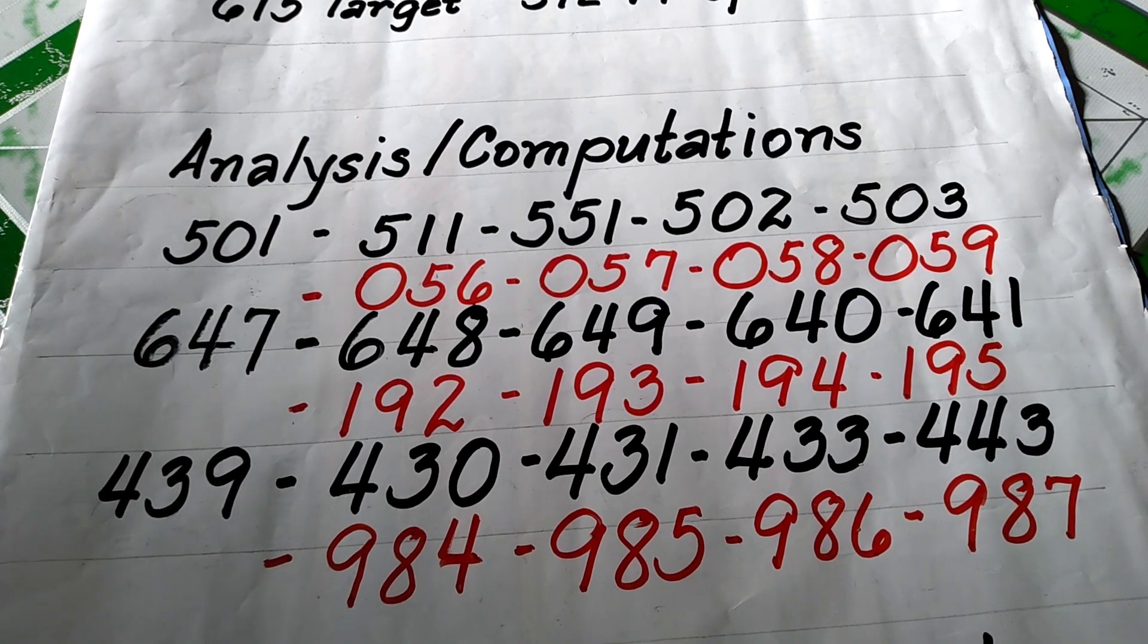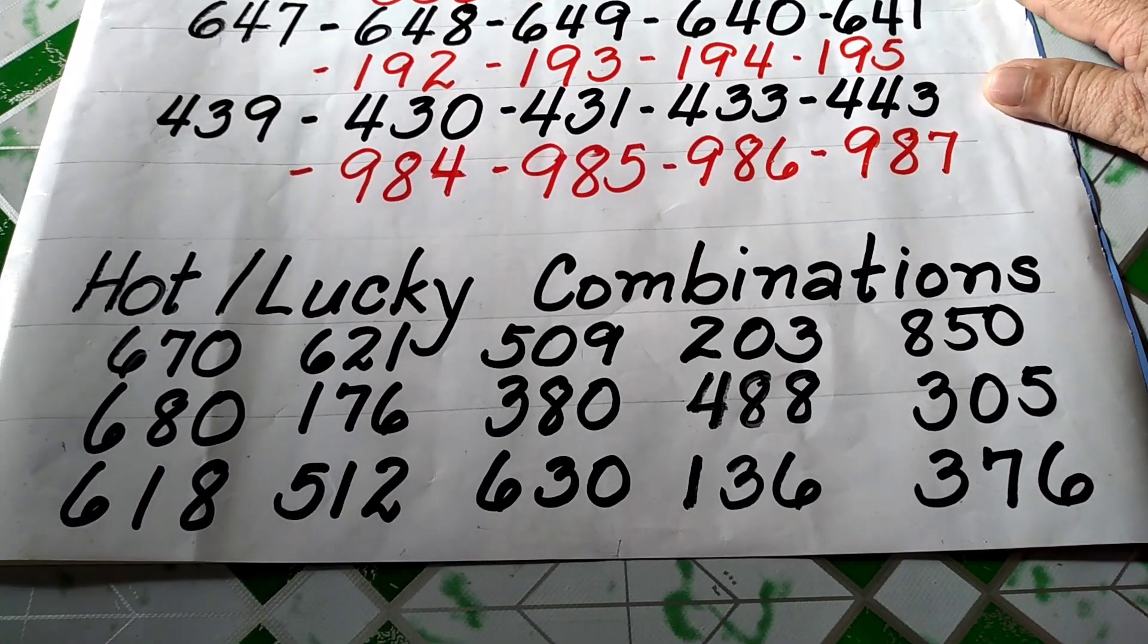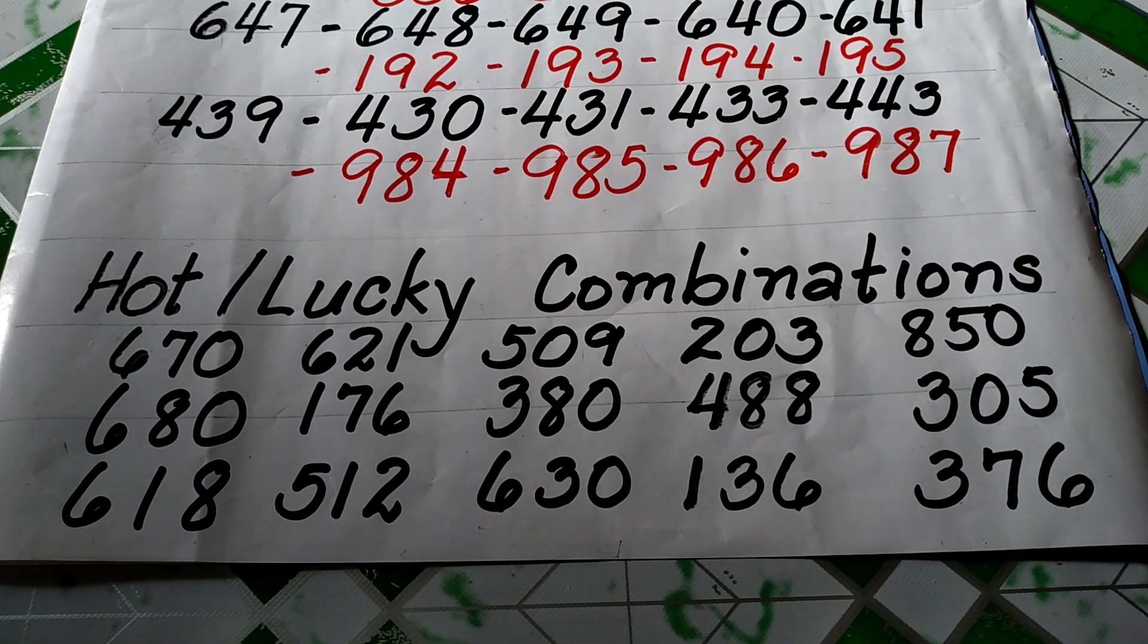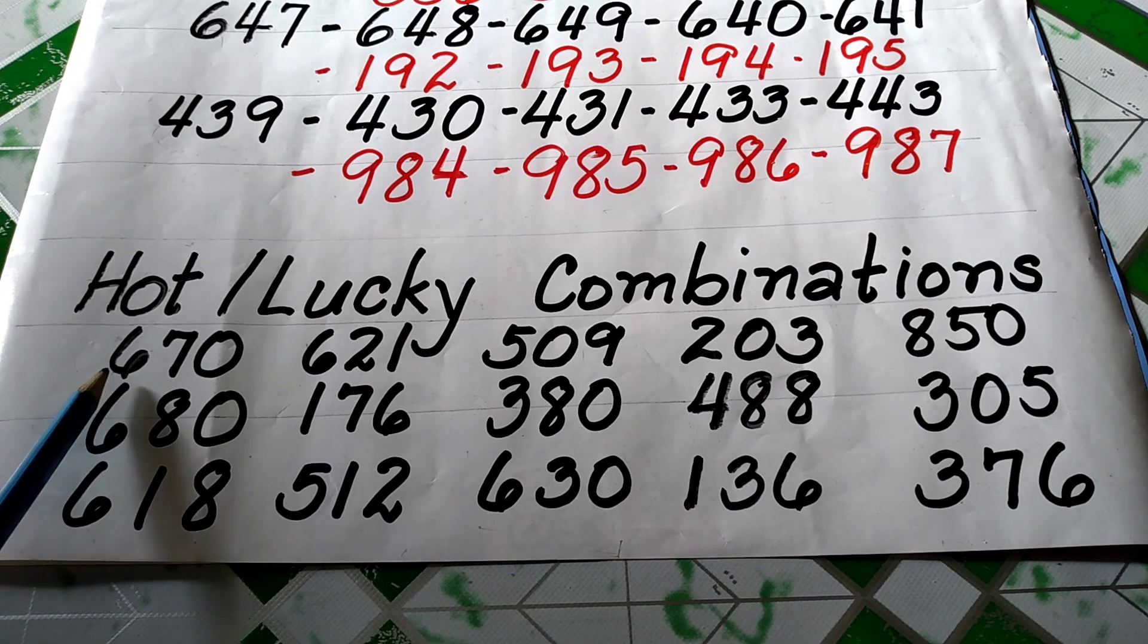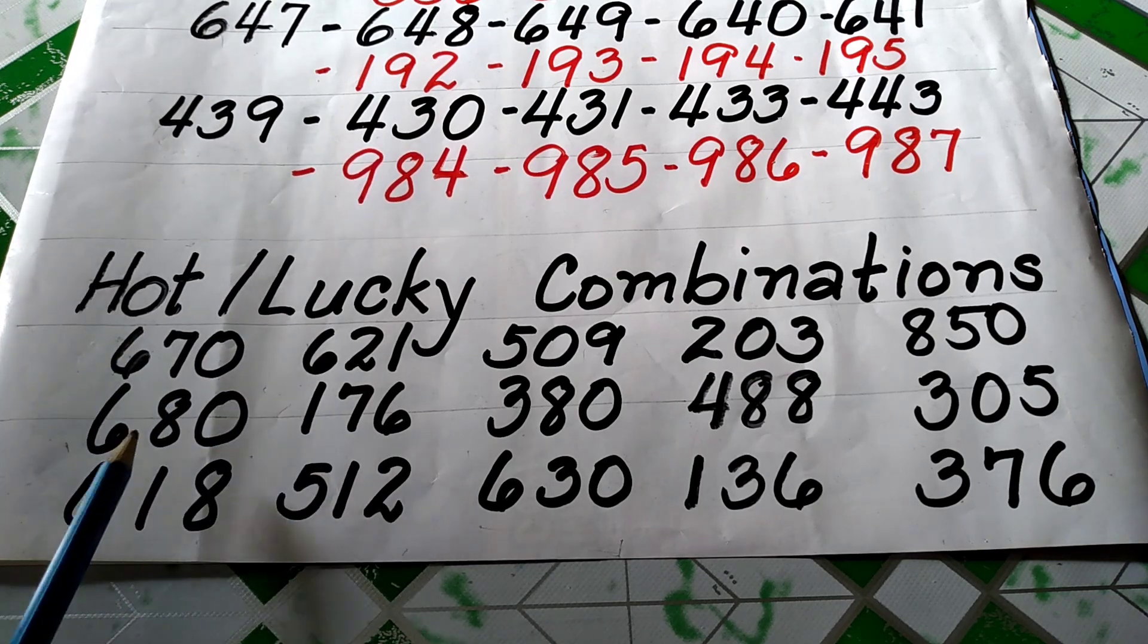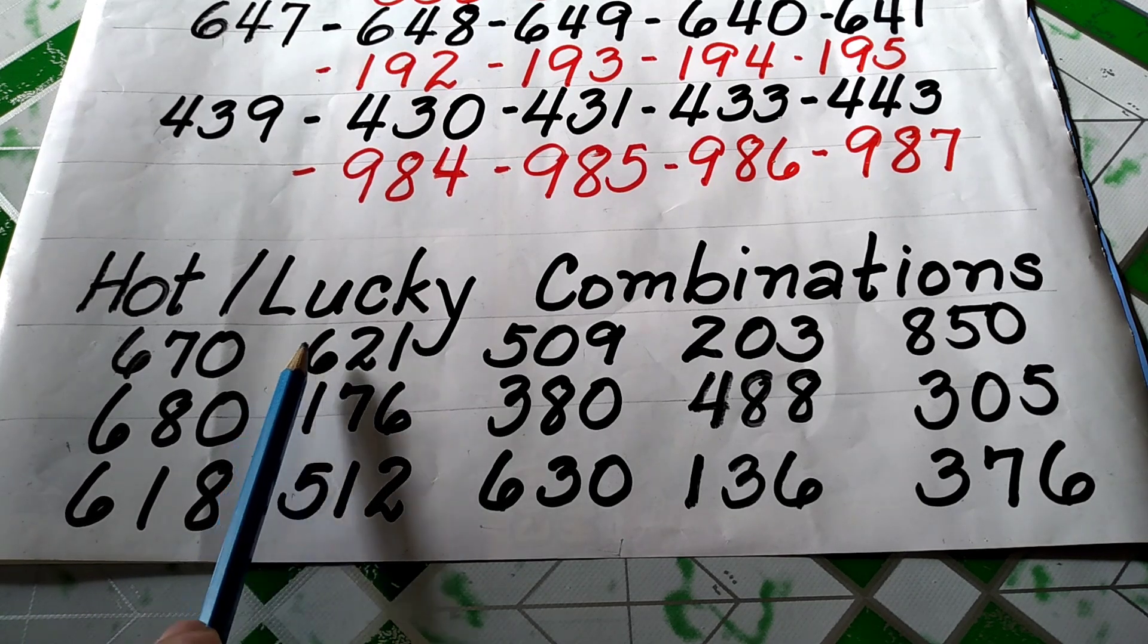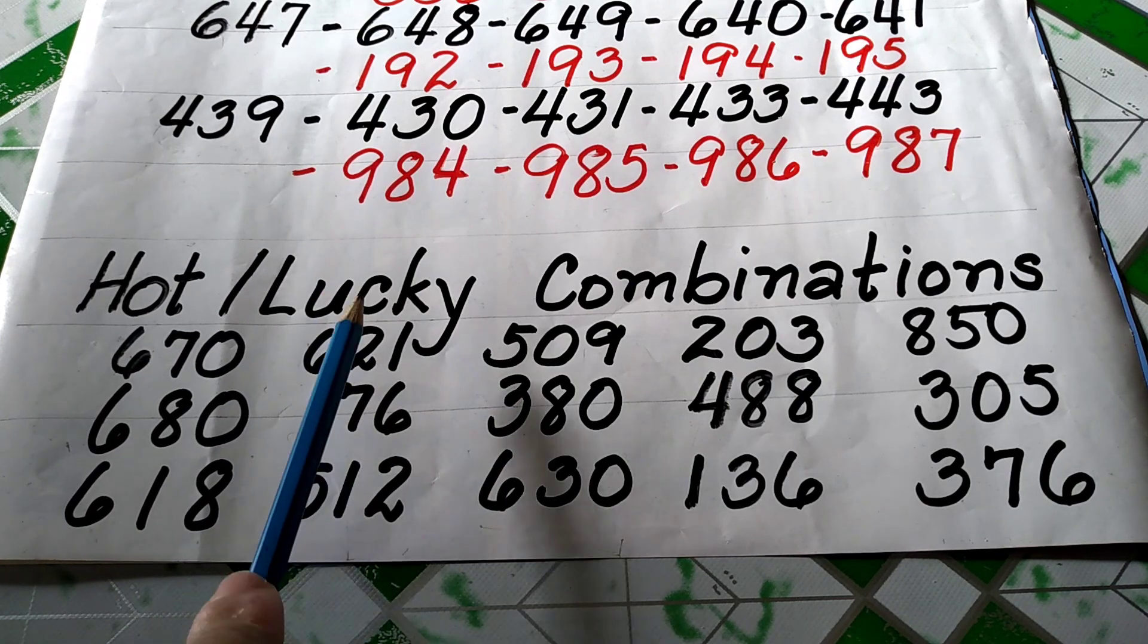Maliban dyan, meron akong dagdag para sa inyo. O di kaya, maaari rin for your eyes only. Baalan na kayo kung kayo ay mag-ride on dito o titignan nyo lang. Pwede rin. So, dito sa unang Hanay, meron tayo 6-7-0, 6-8-0, 6-1-8. Dito naman, sa pangalawang Hanay, 6-2-1, 1-7-6, 5-1-2. Nagsilabas na ito, pero baka bumalik.